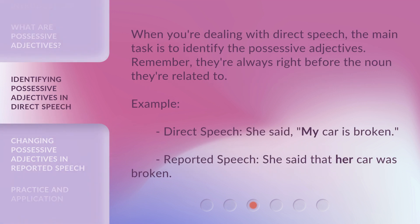When you're dealing with direct speech, the main task is to identify the possessive adjectives. Remember, they're always right before the noun they're related to. Example — Direct Speech: She said, "My car is broken." Reported Speech: She said that her car was broken.